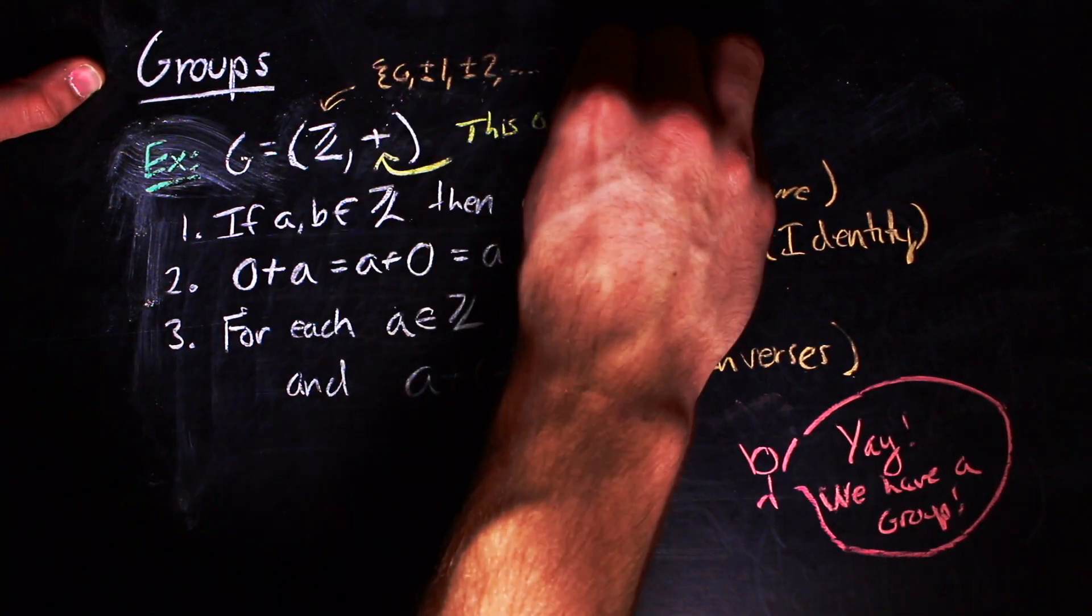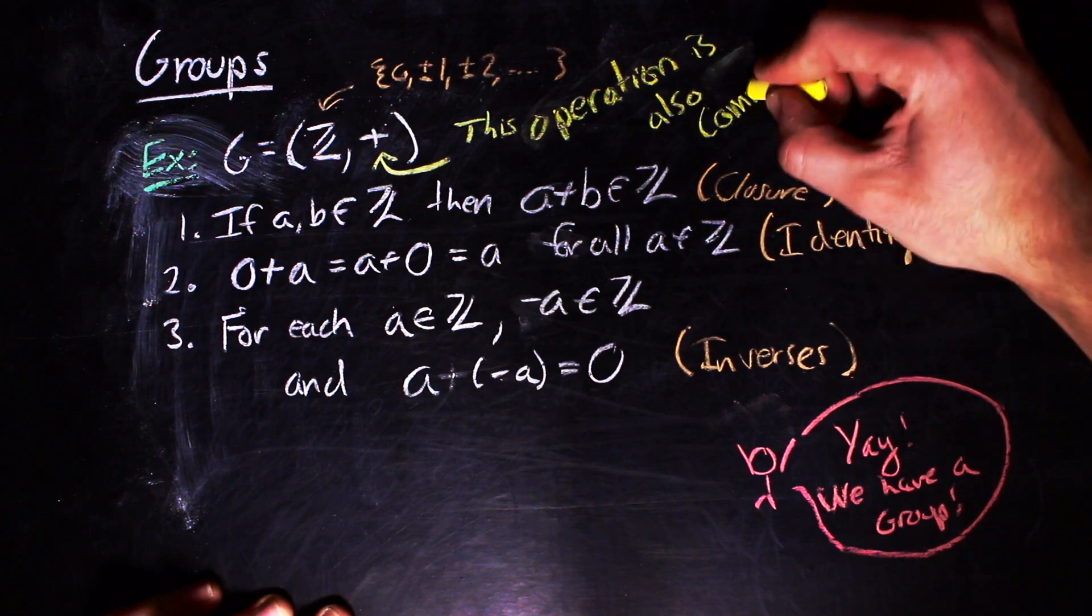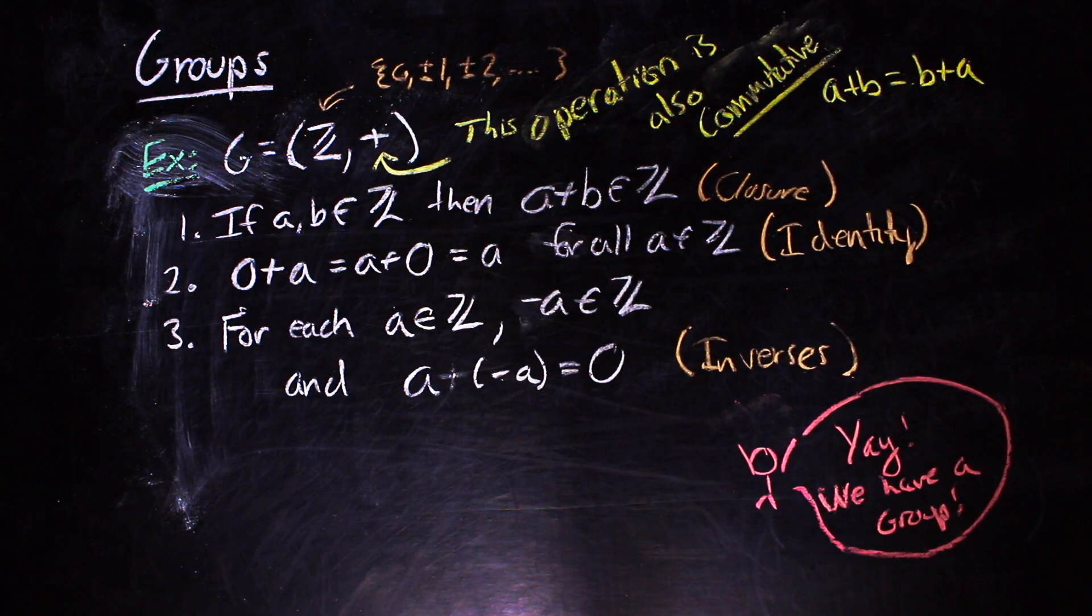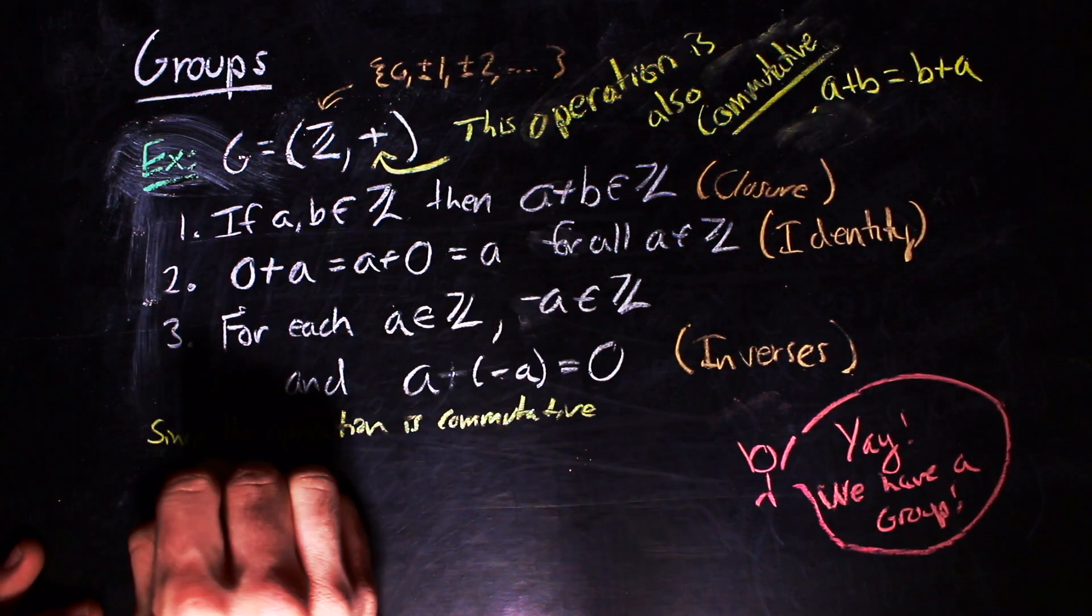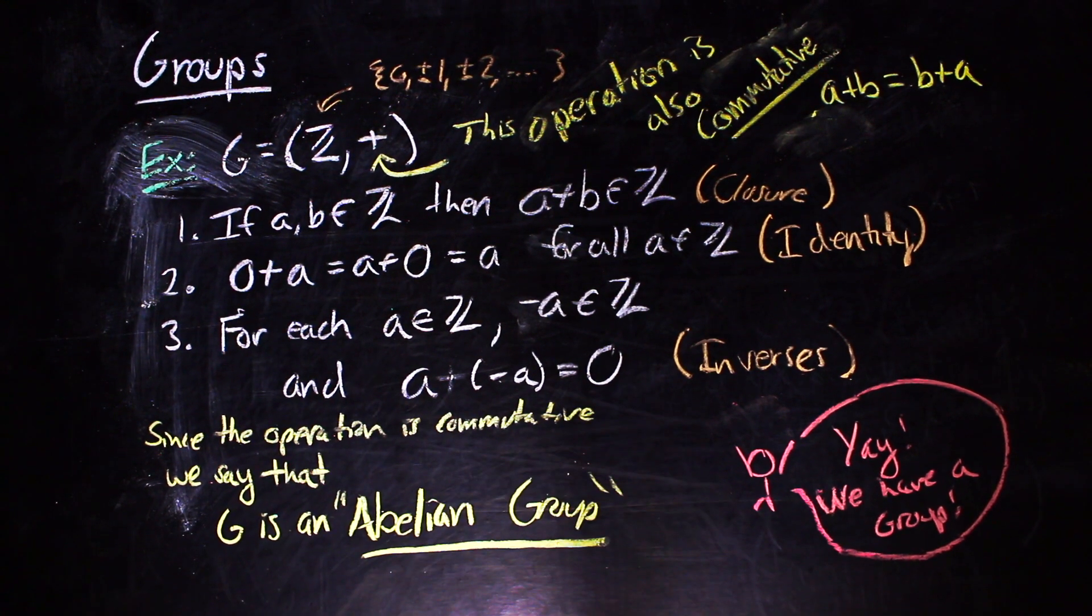The group of integers with addition is particularly nice because the operation is also commutative. But that doesn't have to happen. Groups that have a commutative operation are called Abelian.